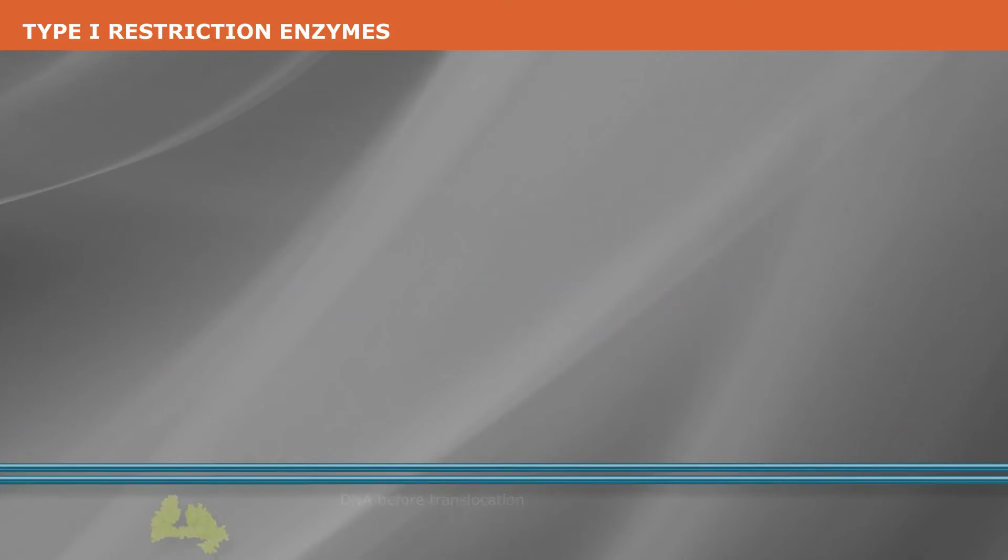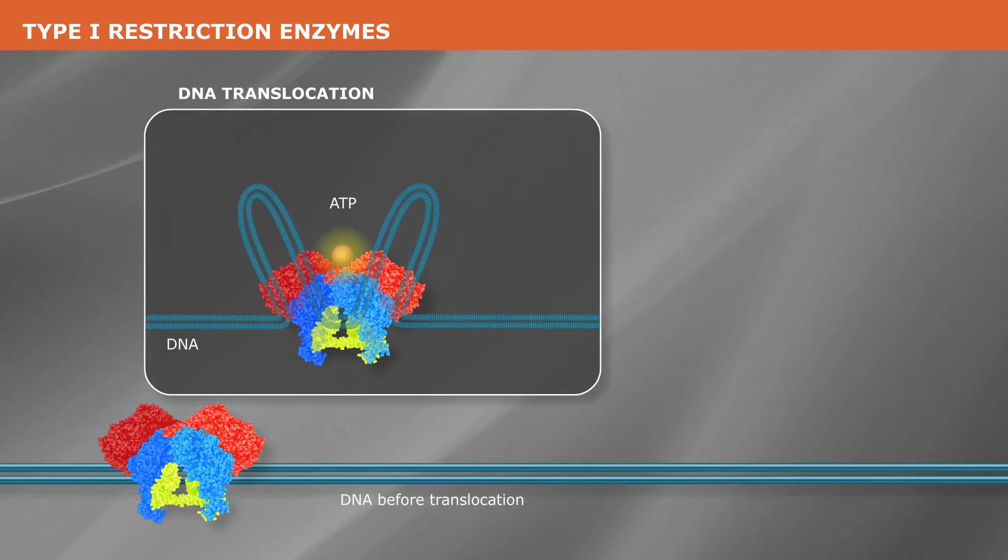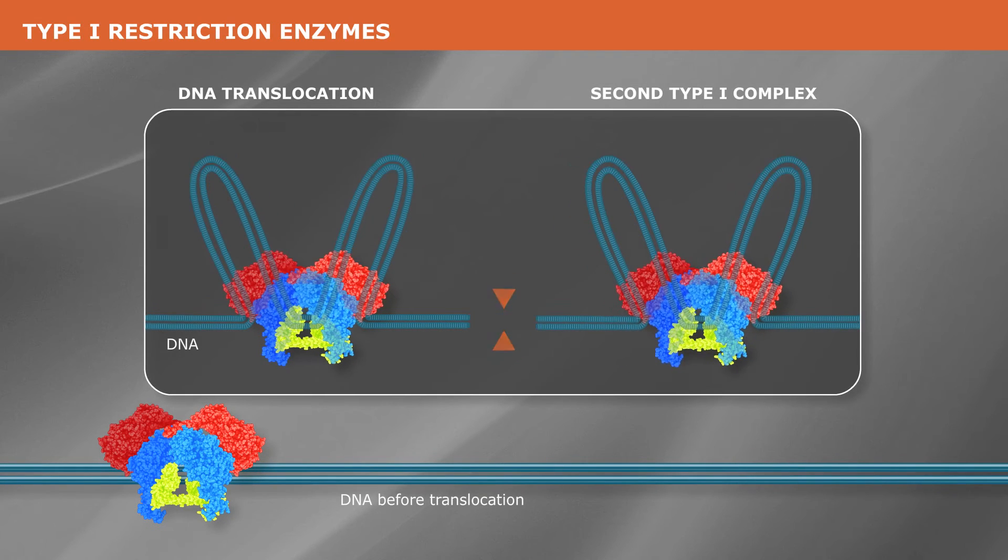Once the protein complex binds the DNA, it acts as a molecular motor using ATP to translocate thousands of bases along the DNA molecule until it encounters a second complex, at which point it creates a double stranded break.